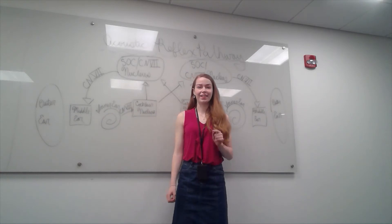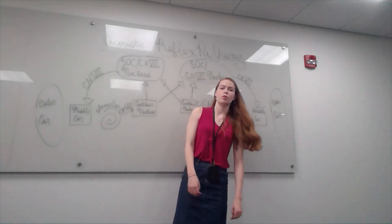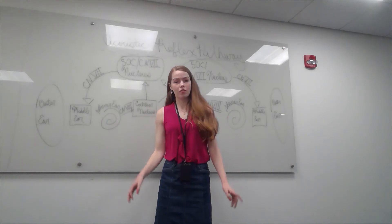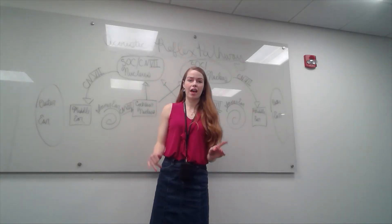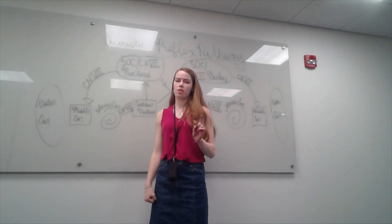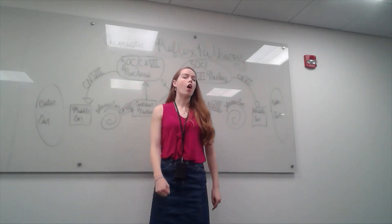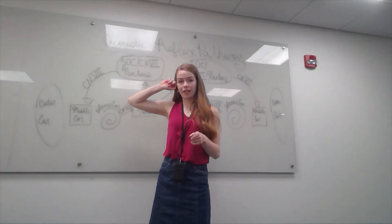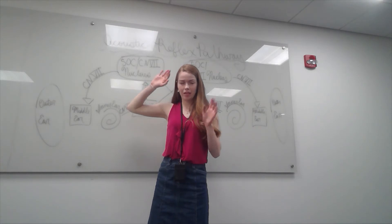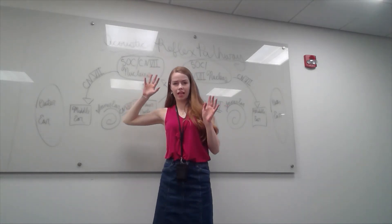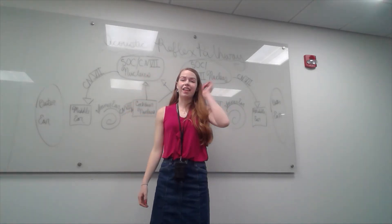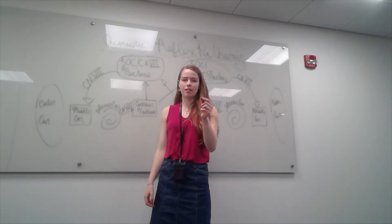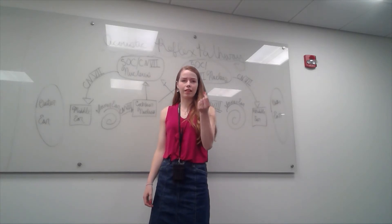Now let's talk about that right contralateral pathway. We have a different setup here with the ears. Because it's right contralateral, and we name for where the probe is placed, our probe is in our right ear. But the stimulus — because it's contralateral, meaning we've got to work both sides of the brain — is in our left ear. And you know it's the stimulus because it's the one that looks like the insert.